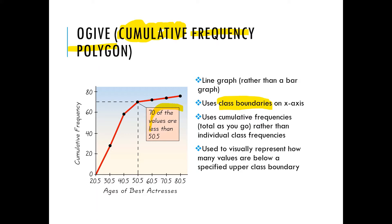And this little box right here has nothing to do with the graph. It's just talking about how to read the graph. So if we look at this data point right here and follow it to the y and x-axis, what we're saying is that 70 of the values fall less than 50.5. So out of the total 80 data points that we collected, 70 out of the 80 values fall less than 50.5. This graph is talking about ages of best actresses. So we're saying 70 out of the 80 best actresses that we found are less than the age of 51. That's basically what we're saying when we read these graphs.